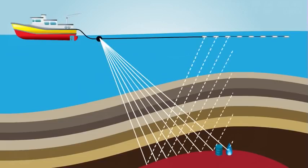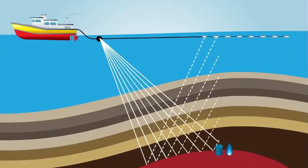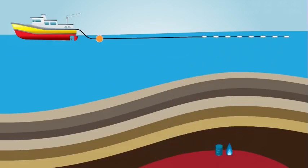These wavelets travel through the water and into the subsurface below where, just like on land, they bounce off the rock layers and then return to the hydrophones to be recorded.